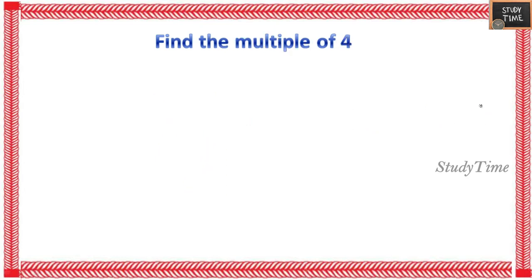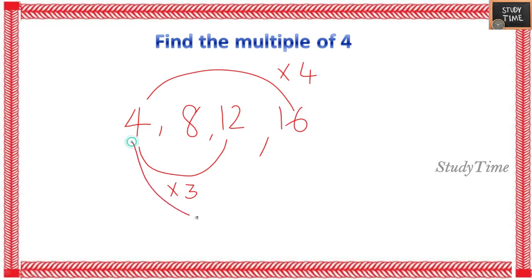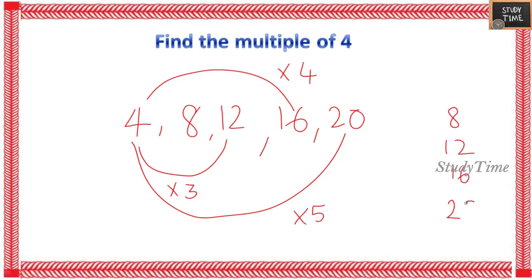Next, find the multiples of 4. Take the number 4 and multiply: 4 × 2 = 8, 4 × 3 = 12, 4 × 4 = 16, 4 × 5 = 20. So the multiples of 4 are 8, 12, 16, and 20.